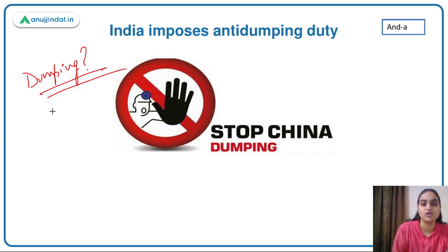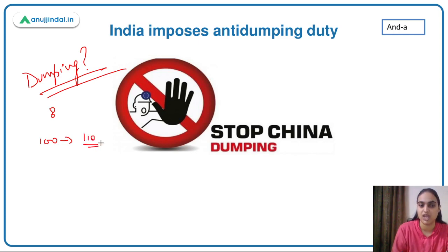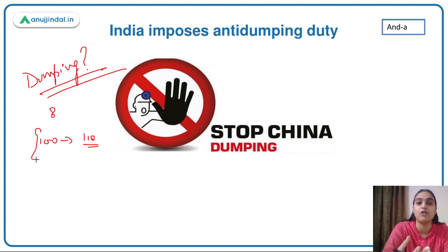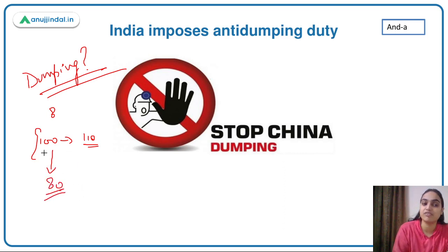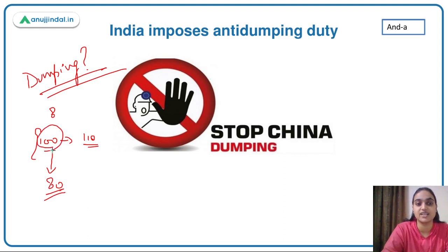For example, if a product costs 100 rupees to produce and is sold at 110 rupees in China, but China has excess production, they may dump it in India at 80 rupees — below the fair value of 100. This is dumping: selling at a lower value in order to get rid of excess production.